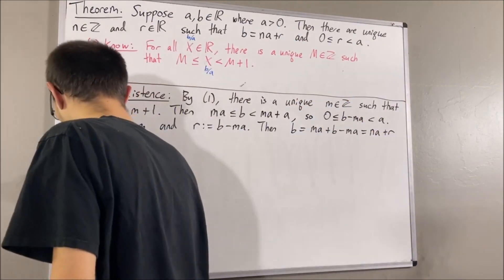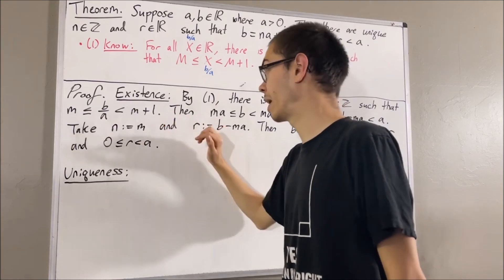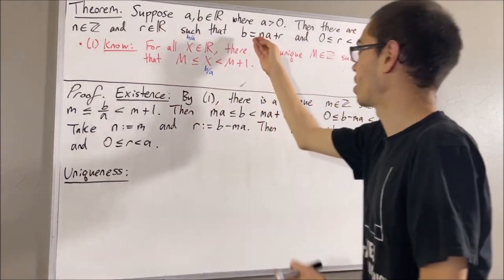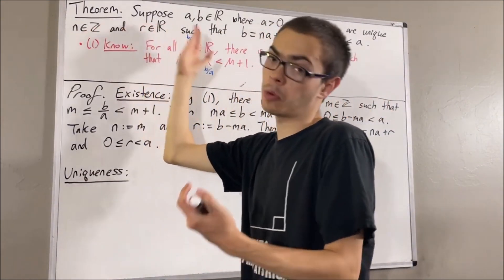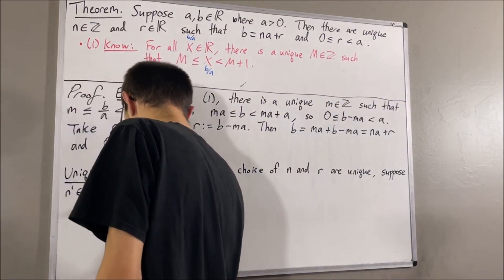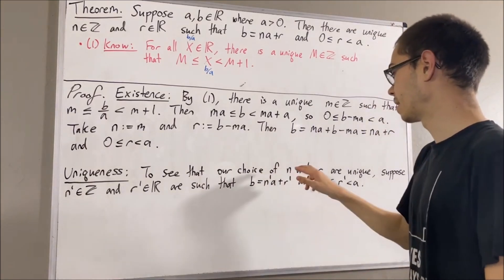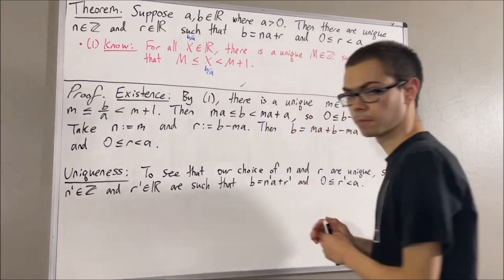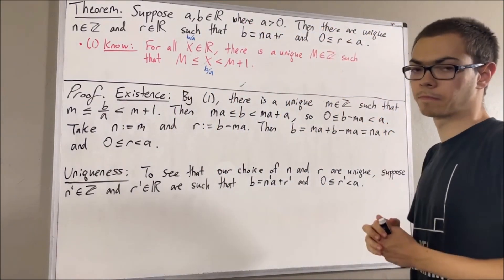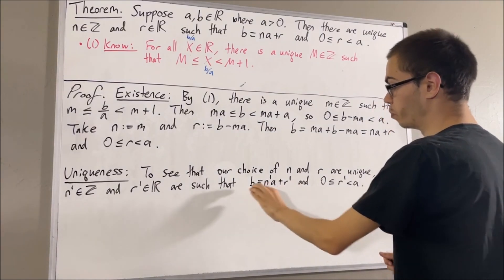Now let's move on to the uniqueness portion. We want to show that the pair of numbers n and r that we took is the only pair which satisfies these two conditions. To prove that, let's suppose we have another pair which satisfies these two conditions — let's call them n prime and r prime. The goal is to show that n is equal to n prime and r is equal to r prime. To start, notice we can take this equation, subtract n prime a to the other side, and we get that r prime is equal to b minus n prime a.